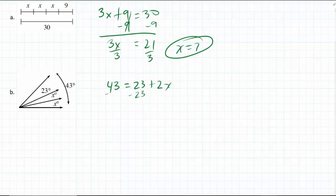Okay, and to solve, we're just going to use our equation solving skills. 43 minus 23 is 20. This cancels out, equals 2x, divided by 2, x is going to equal 10.